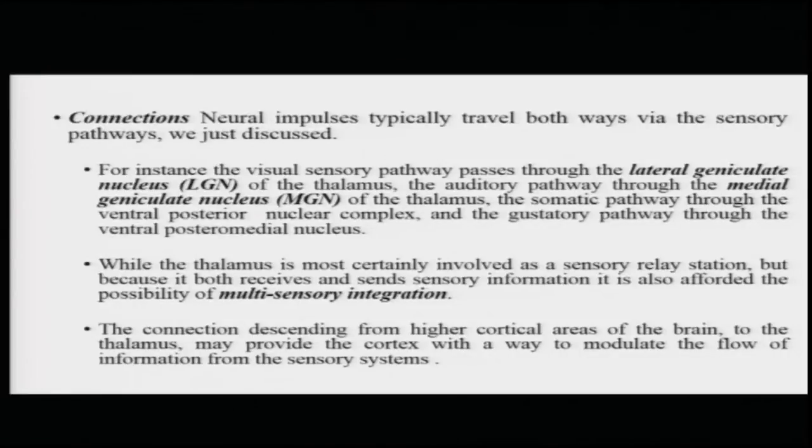While the thalamus is most certainly involved as a sensory relay station, it is not entirely clear what kind of processing happens with respect to information descending from higher regions of the brain toward the thalamus. One alternative researchers have proposed is that the thalamus participates in multisensory integration — combining information from different senses to form holistic impressions of the percept. The connections descending from higher cortical areas toward the thalamus may provide the cortex with a way to modulate the flow of information from the sensory systems and integrate them if needed.